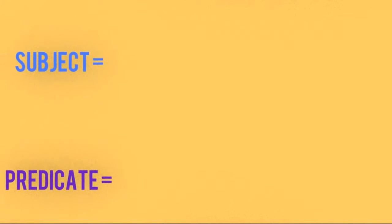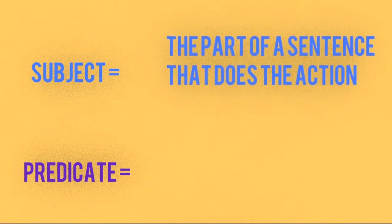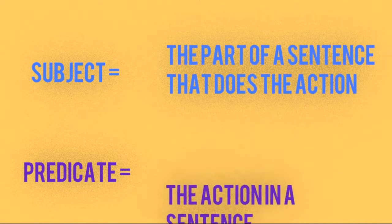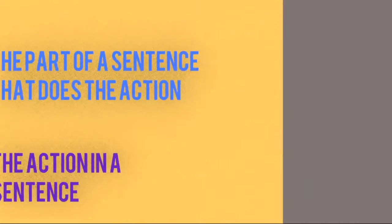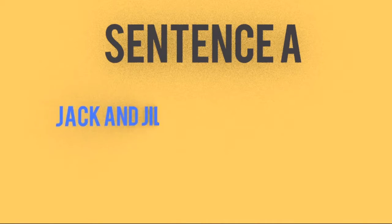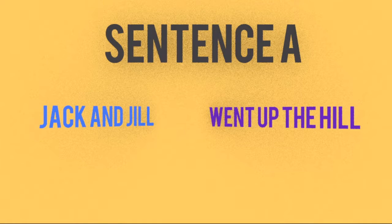For those at home, every sentence or independent clause is made of a subject and a predicate. The subject is what the sentence is referring to, and the predicate is the part of the sentence with the verb and something else describing the subject. In one corner, we have Sentence A — its sentence is 'Jack and Jill went up the hill.'